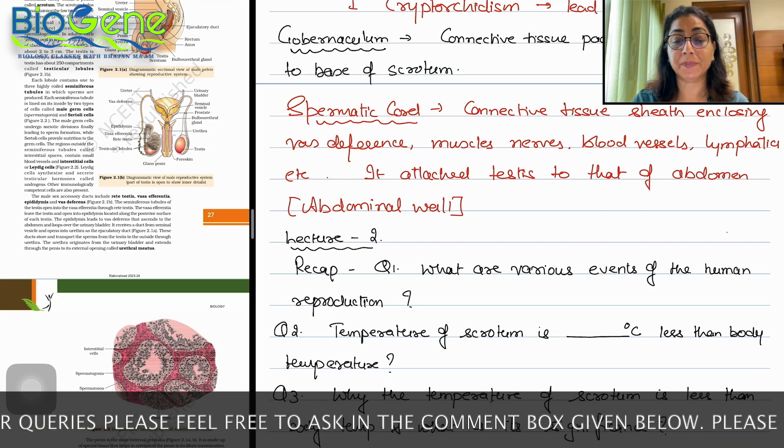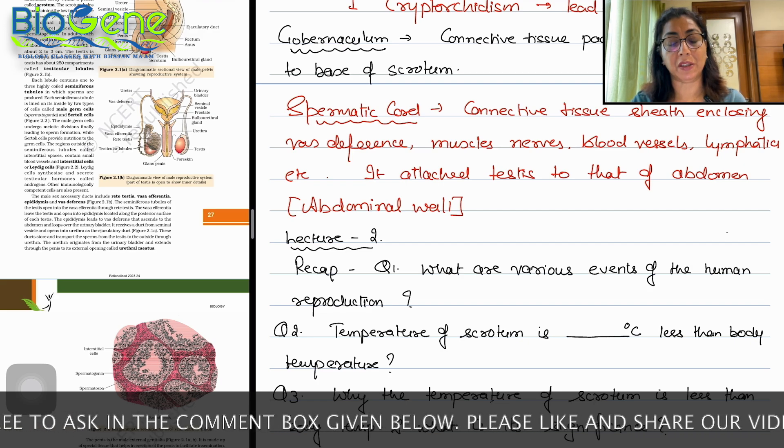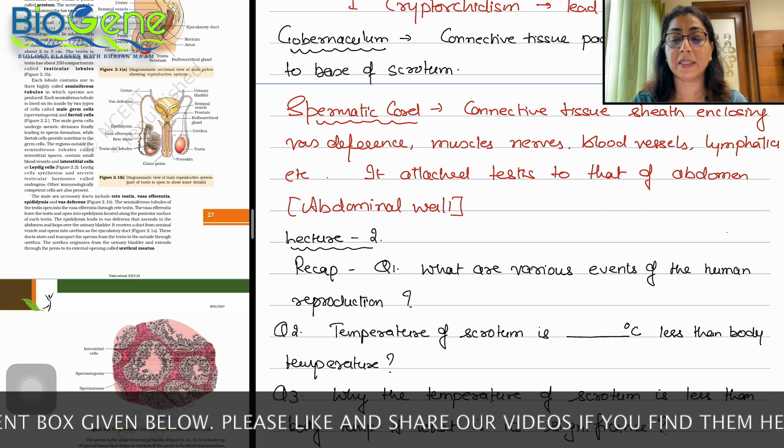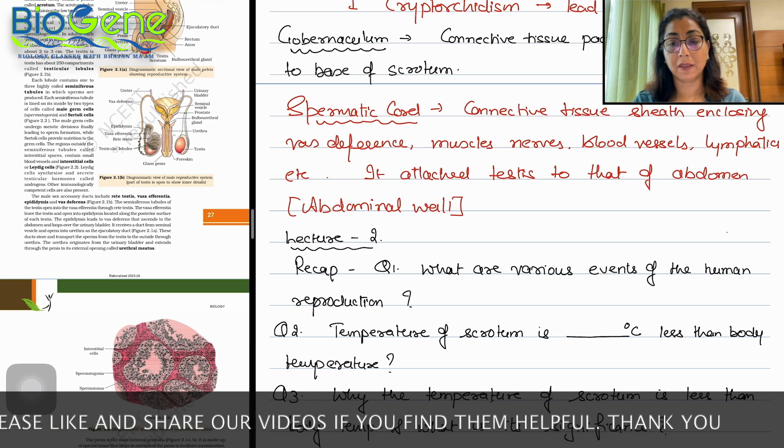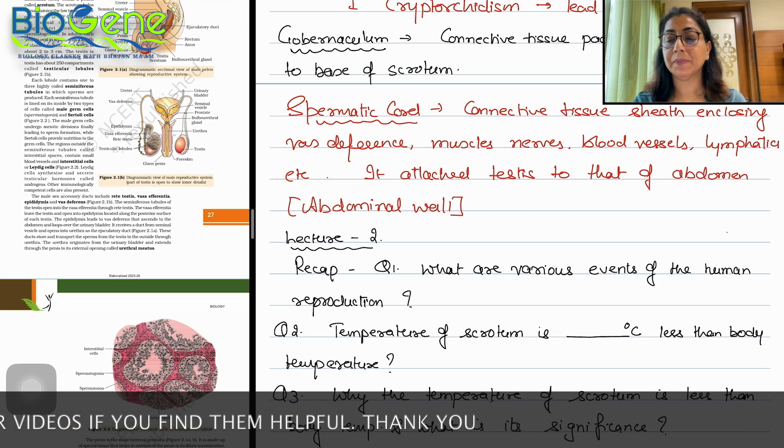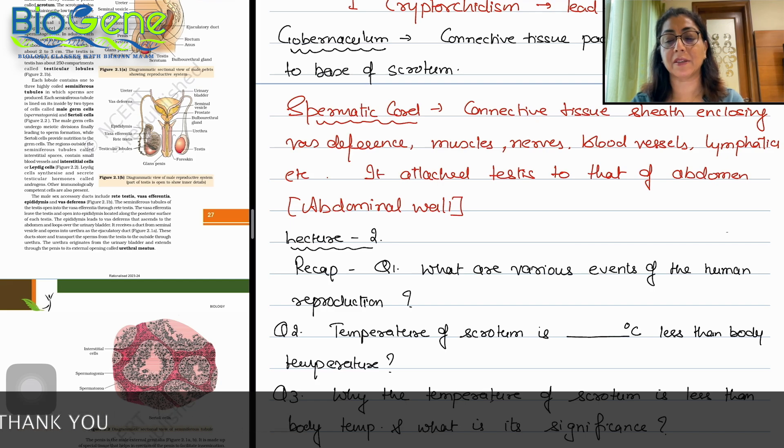Now what is spermatic cord? A connective tissue sheet that includes vas deferens, muscles, nerves, blood vessels, lymphatics, etc. and it attaches testes to that of the abdomen.